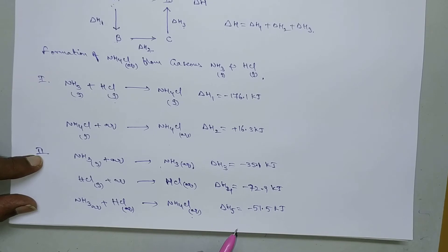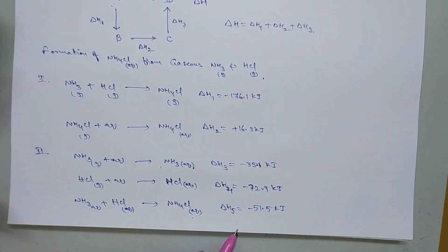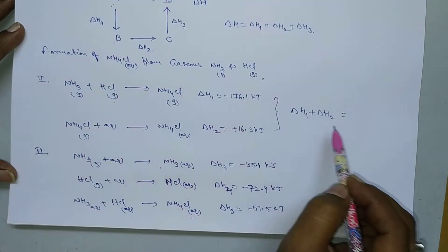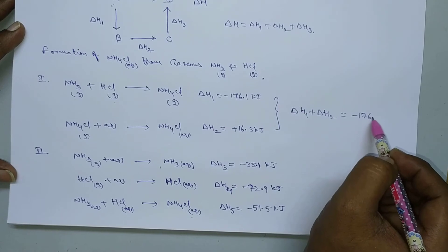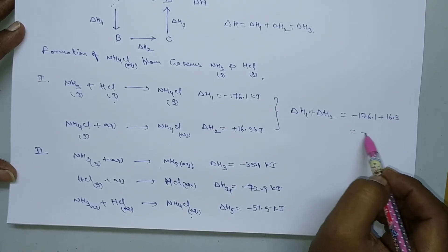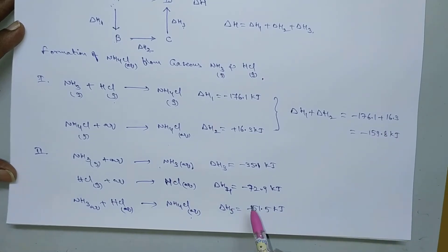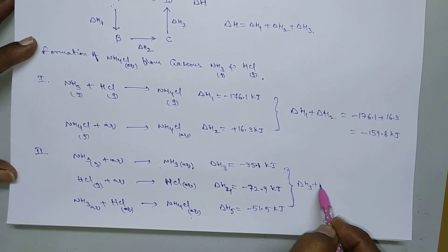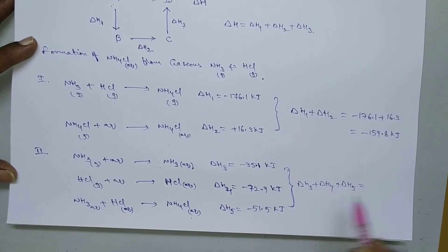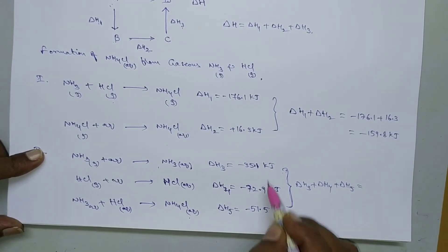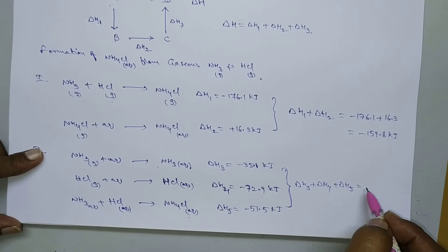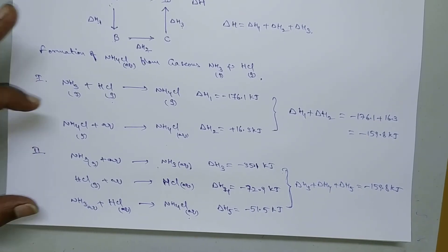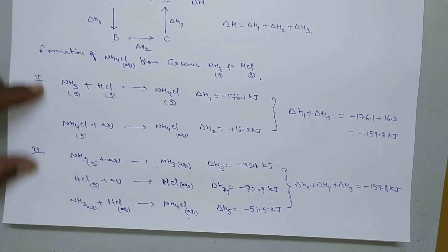These are the two different methods. Whatever the method of preparation and whatever the number of steps, the total enthalpy change remains constant. For the first pathway: delta H1 plus delta H2 equals minus 176.1 plus minus 16.3 equals minus 159.8 kilojoules per mole. For the second pathway: delta H3 plus delta H4 plus delta H5 equals minus 35.1 plus minus 72.9 plus minus 51.5, which also gives minus 159.8 kilojoules — confirming Hess's Law.